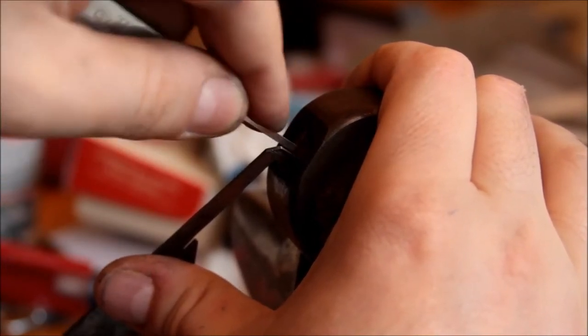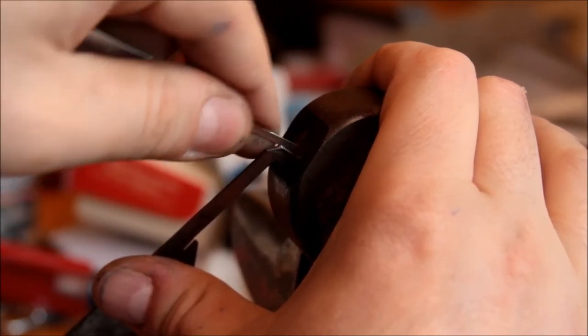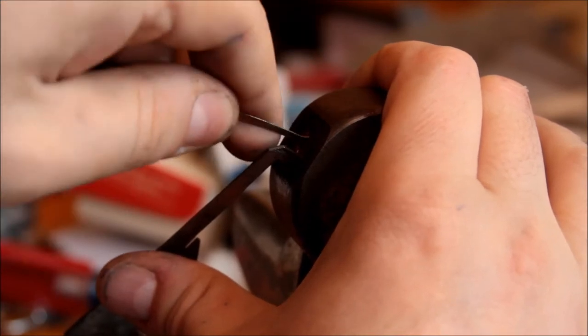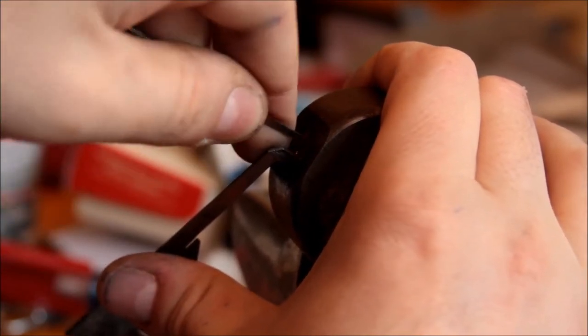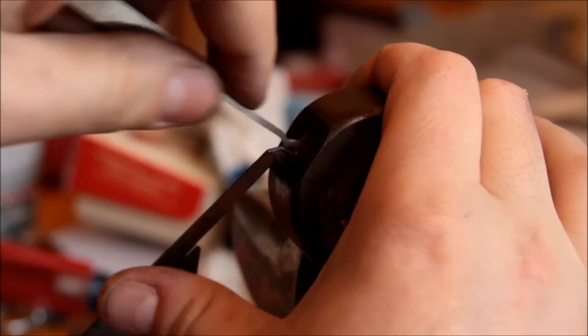So this is a wafer tumbler lock. And these typically are pretty susceptible to the old boga top, but it depends on how good the springs are.